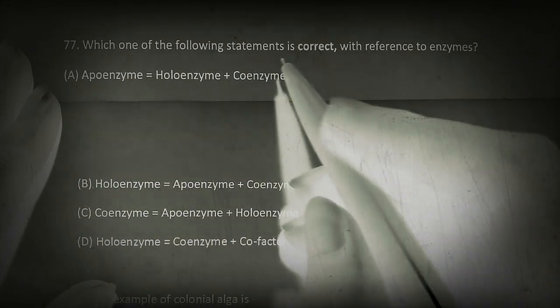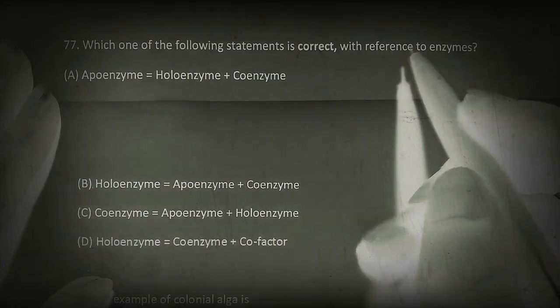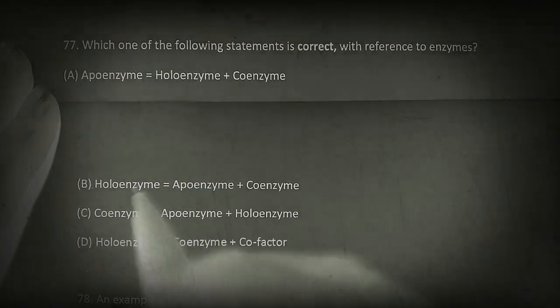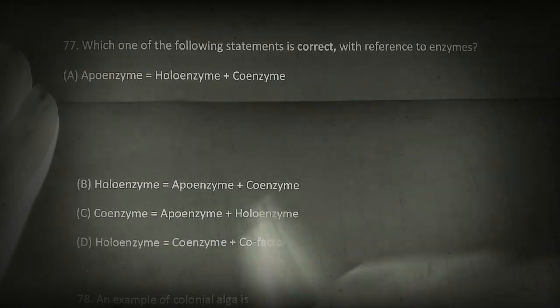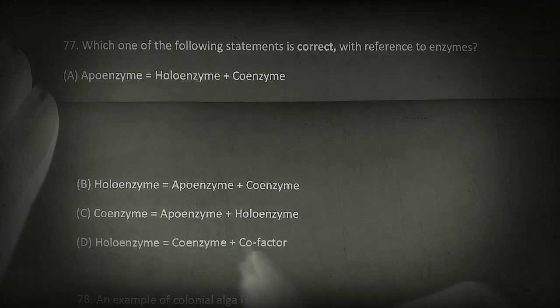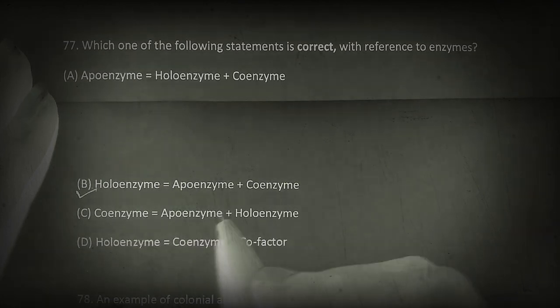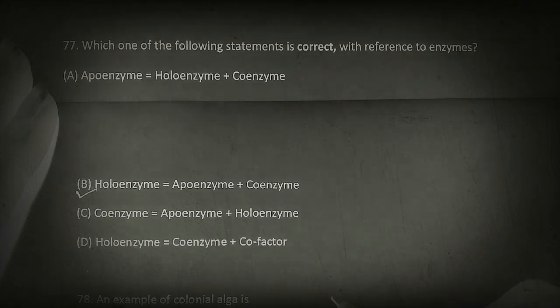Which of the following statements is correct with reference to enzymes? Apoenzyme equals holoenzyme plus coenzyme. Holoenzyme equals apoenzyme plus coenzyme. Coenzyme equals apoenzyme plus holoenzyme. Holoenzyme equals coenzyme plus cofactor. The correct choice is B: Holoenzyme equals apoenzyme plus coenzyme. Holoenzyme is the complete conjugate enzyme consisting of an apoenzyme and a cofactor. Cofactor may be organic or inorganic in nature. Organic cofactors are of two types, coenzyme and prosthetic groups.